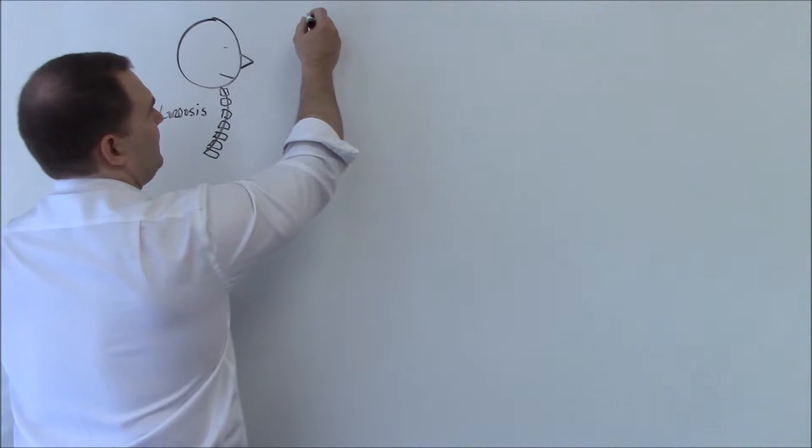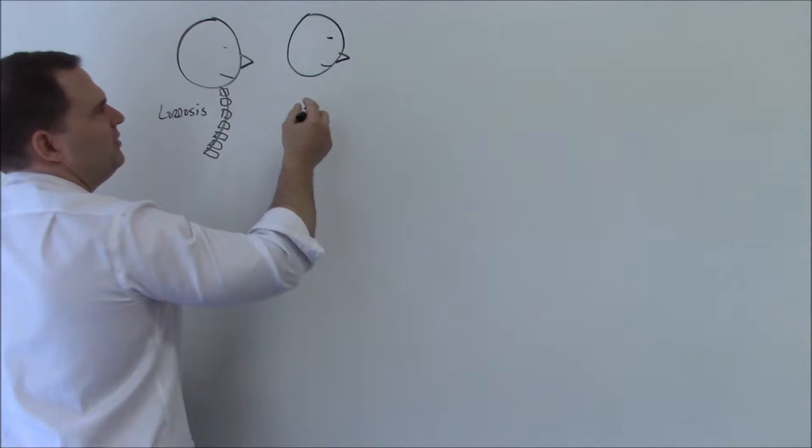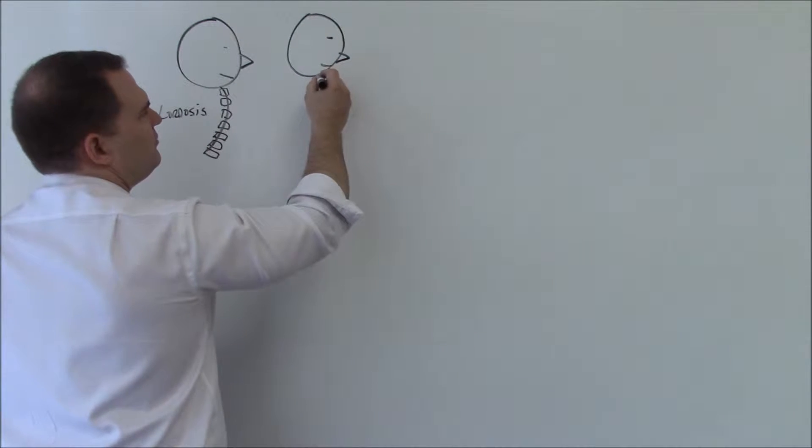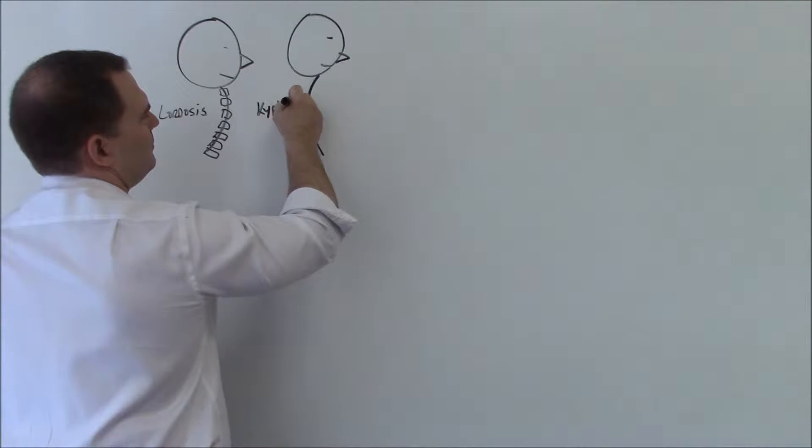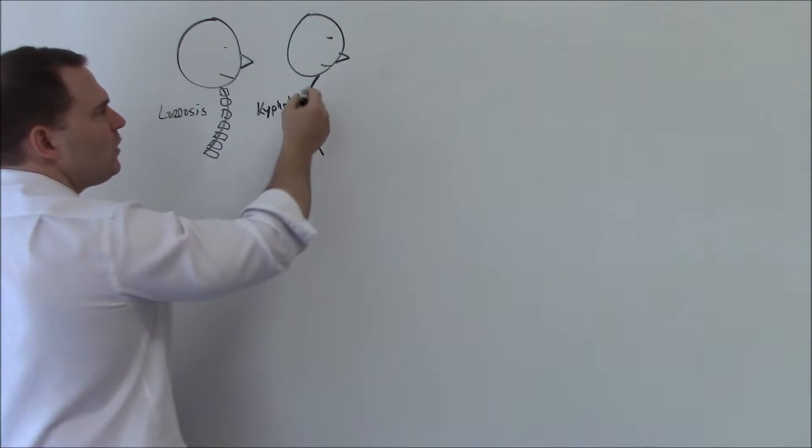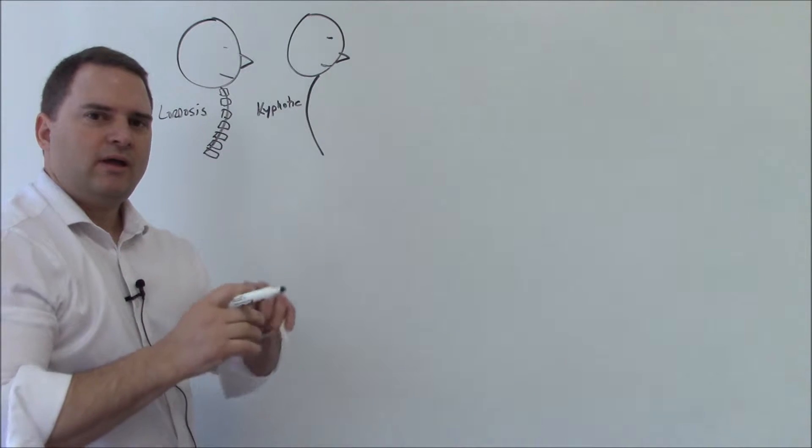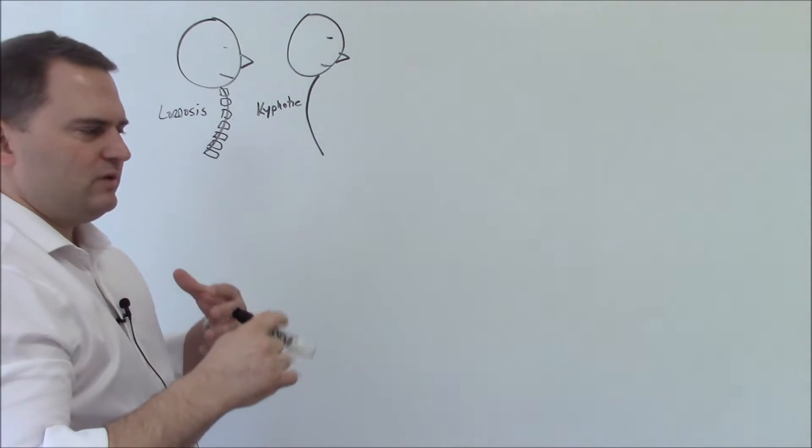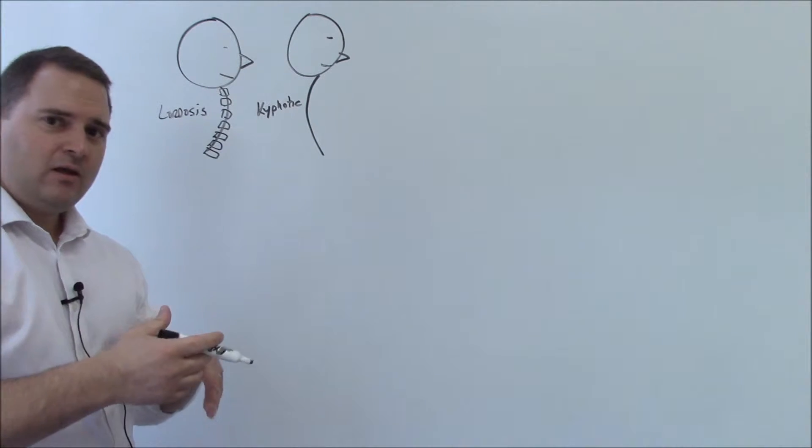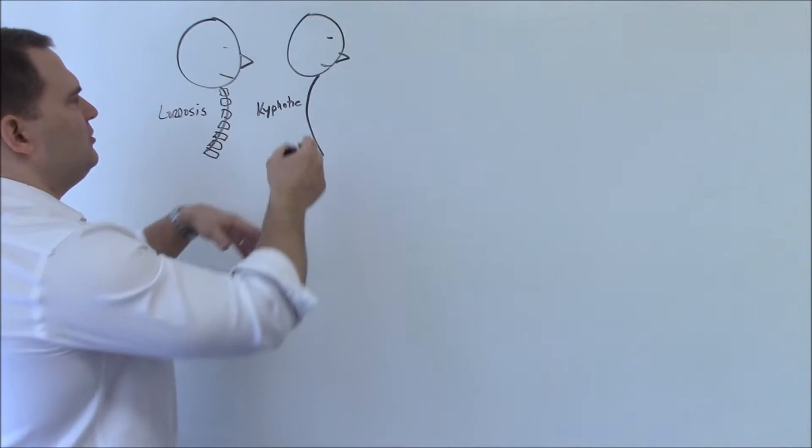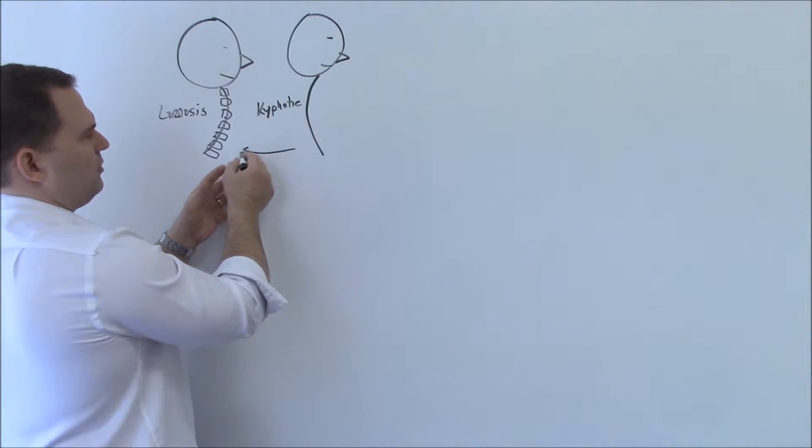The next type of spine that we see, we put a little unhappy face there. This is called a kyphotic spine, which is backwards. A lot of times when we see this, it's due to a more acute presentation, an injury, a lot of muscle spasm. I see this more frequently in women than men, but this is not a good state to be in.